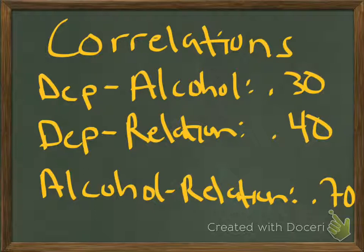I don't just want to know what's the relationship between alcohol and depression. I want to know what's that relationship once you control for — in statistics terms, once you factor out — the relationship between depression and relationship woes. The relationship between the two independent variables is very important because it determines how much unique variance is explained by each. The stronger the correlation between alcohol and relationship woes, the less each one is likely to explain on its own in the dependent variable.